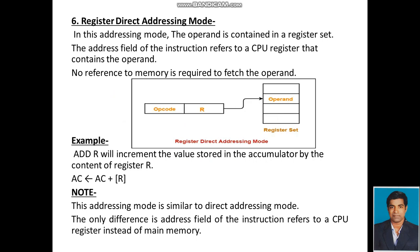Register Direct Addressing Mode: In this addressing mode, the operand is contained in a register set. The address field of the instruction refers to a CPU register that contains the operand. No reference to memory is required to fetch the operand. The instruction's operand portion uses a register, and this register gives the address of the particular operand memory location. For example, 'Add R' increments the accumulator by the content of register R, denoted as: Accumulator = Accumulator + [R].